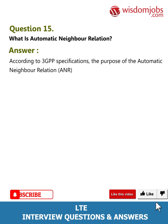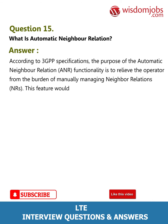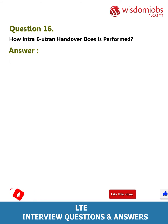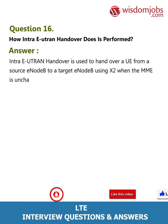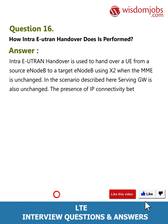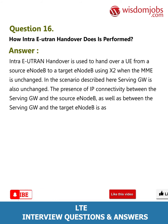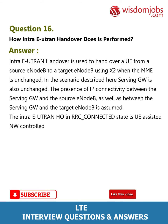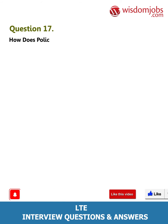Question 15: What is Automatic Neighbor Relation (ANR)? According to 3GPP specifications, the purpose of the Automatic Neighbor Relation ANR functionality is to relieve the operator from the burden of manually managing neighbor relations (NRs). This feature reduces operator effort to provision. Question 16: How is intra E-UTRAN handover performed? Intra E-UTRAN handover is used to hand over a UE from a source eNodeB to a target eNodeB using X2 when the MME is unchanged. In this scenario, the Serving GW is also unchanged, and IP connectivity between the Serving GW and both source and target eNodeBs is assumed. The intra E-UTRAN handover in RRC_CONNECTED state is UE-assisted, network-controlled HO with HO preparation signaling in E-UTRAN.